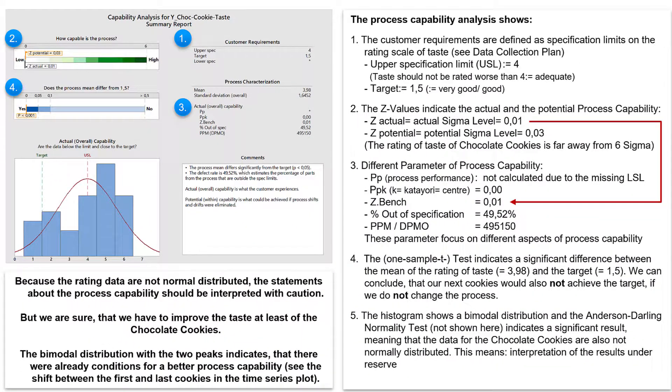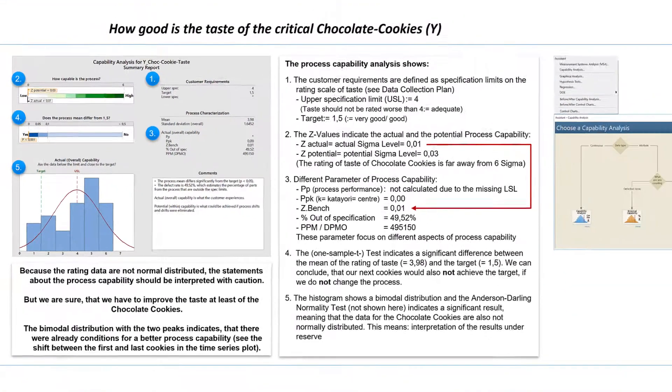This means that we must at least improve the taste of the chocolate cookies. The histogram again shows the distribution of our taste ratings. Additionally, one vertical line indicates our target value and another line the upper specification limit. As you can see, the center of the distribution is far from the target value and many cookies are above the upper specification limit. The poor process capability of our chocolate cookies is therefore also graphically traceable here.